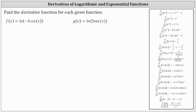We're asked to determine the derivative function for each given function. First, we have f of x equals natural log of negative four cosecant x. Because f of x is a composite function, we do need to apply the chain rule to find f prime of x. We'll notice how the inner function, which we often refer to as u, is negative four cosecant x.